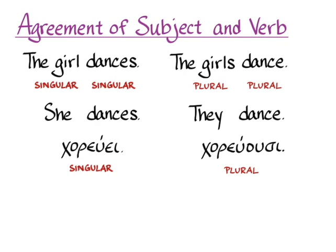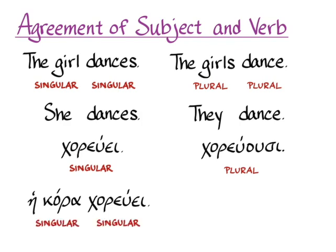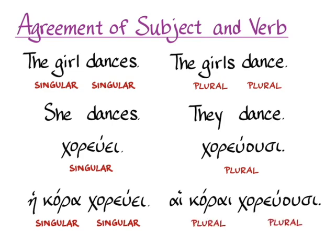But if we give a verb a separate subject noun, that noun does have to agree in number with its verb. So 'the girl dances' is 'he kora chorewe,' where the singular nominative noun subject 'he kora' goes with the singular verb 'chorewe.' And in the plural, 'he korae choreousi' has a plural subject going with a plural verb. This works the same way in Greek as it does in English.